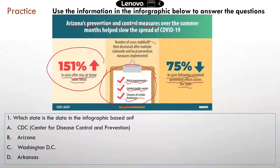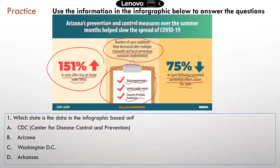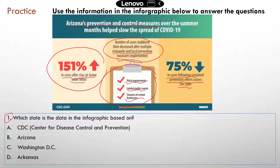There is further explanation of what this infographic represents: the number of cases stabilized and then decreased after multiple statewide and local prevention measures were implemented. That's what the infographic is about. Now that you've understood everything, it should be pretty easy to answer the questions. Question one: which state is the data in the infographic based on? That's Arizona.